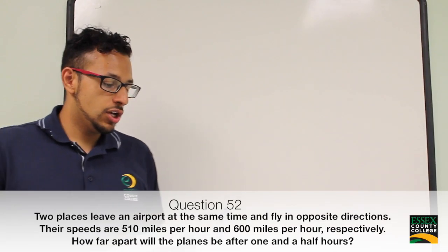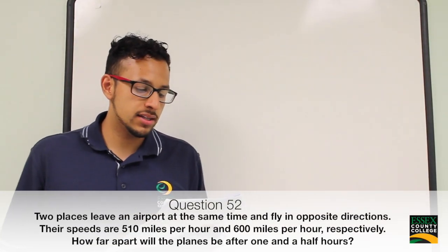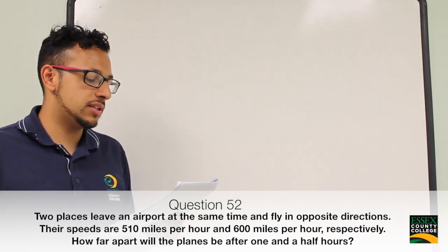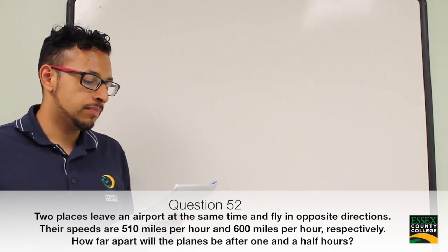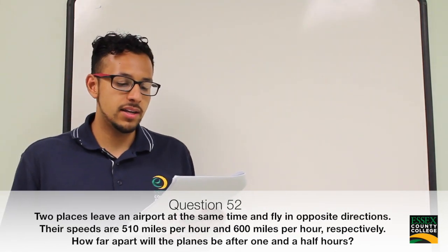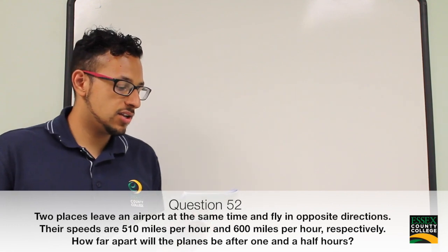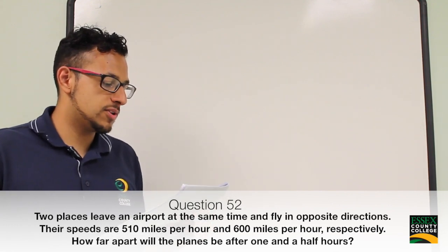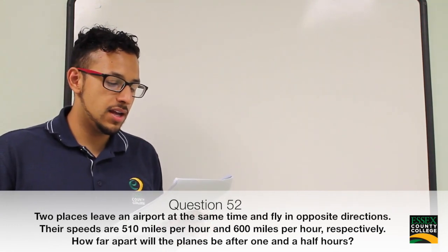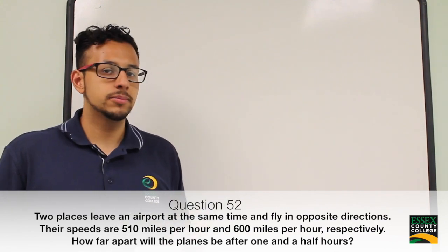The problem states two planes leave an airport at the same time and fly in opposite directions. Their speeds are 510 miles per hour and 600 miles per hour respectively. How far apart will the planes be after one and a half hours?